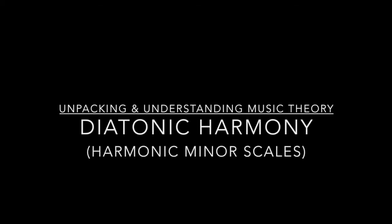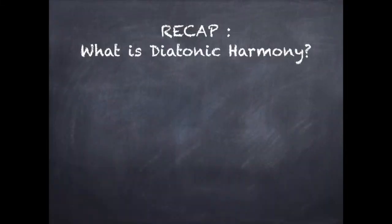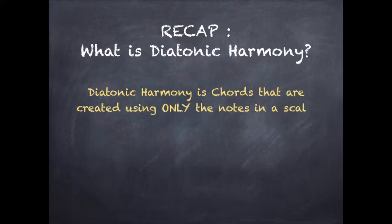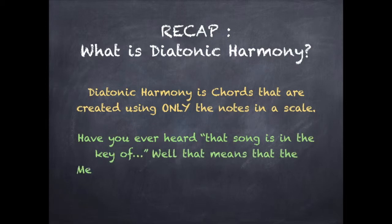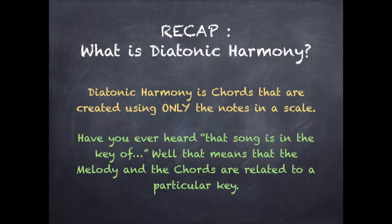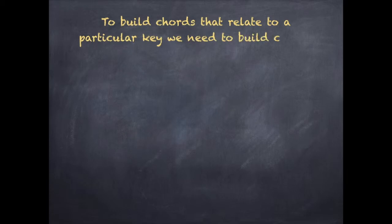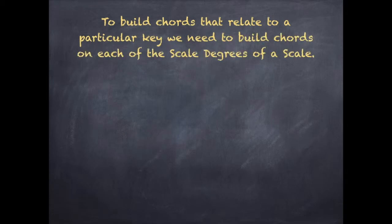This theory video looks at diatonic harmony, specifically harmonic minor. Recap: what is diatonic harmony? Diatonic harmony is chords that are created using only the notes in a scale. Have you ever heard that a song is in the key of something? Well, that means that the melody and the chords are related to a particular key. To build chords that relate to a particular key, we need to build chords on each of the scale degrees of a scale.